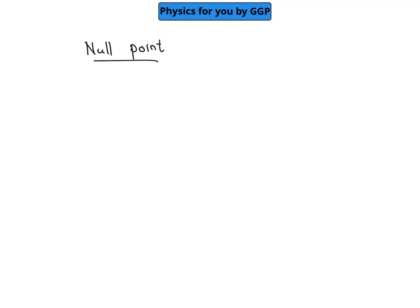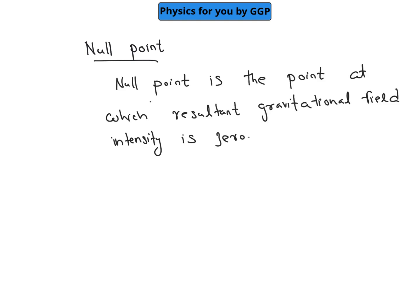I will discuss the concept called null point. Null point is nothing but the point where the net gravitational field is equal to zero. The null point is the point at which the resultant gravitational field is zero.